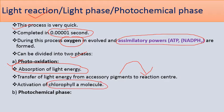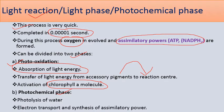The second part of the photochemical phase involves photolysis of water — 'photo' meaning light, 'lysis' meaning breakdown — where water molecules are broken down into hydrogen ions and oxygen molecules using light. This is followed by electron transport for the synthesis of assimilatory powers, ATP and NADPH.